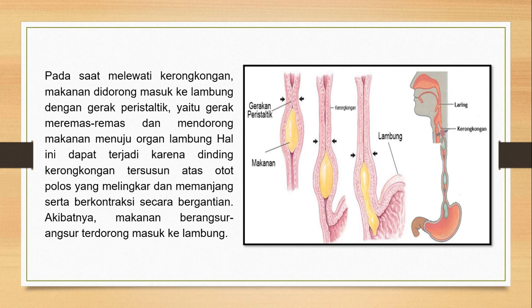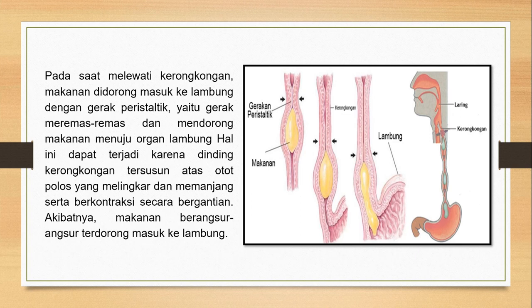Pada saat melewati kerongkongan, makanan akan didorong masuk ke lambung dengan gerak peristaltik, yaitu gerak meremas-remas dan mendorong makanan menuju organ lambung. Hal ini dapat terjadi karena dinding kerongkongan tersusun atas otot polos yang melingkar dan memanjang serta berkontraksi secara bergantian. Akibatnya makanan berangsur-angsur terdorong ke lambung. Ketika tidak dilewati makanan maka kerongkongan akan menyempit, sedangkan ketika dilewati makanan maka dia akan melebar atau berkontraksi.